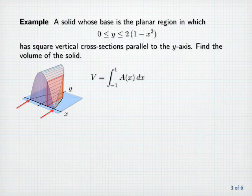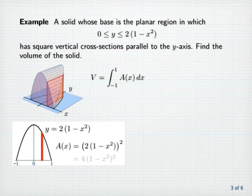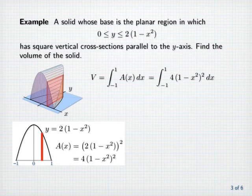Let's look again at the base of the solid. Each cross-section's bottom edge extends from the x-axis up to the parabola, and so its length is simply y equals two times one minus x squared. Therefore, A of x equals y squared, or four times one minus x squared, quantity squared. So the volume of our solid is the integral from minus one to one of four times one minus x squared, quantity squared, dx.